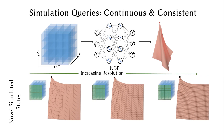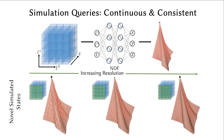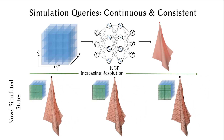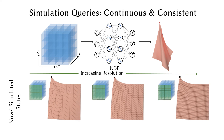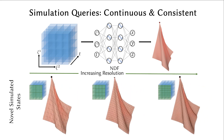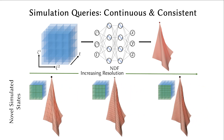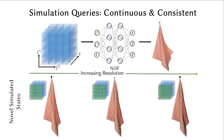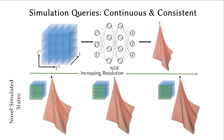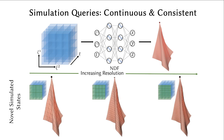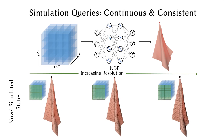Upon convergence, our method encodes the learned quasi-static state of the thin shell that can be queried continuously in space. It allows surface-state sampling at arbitrary spatial resolutions without retraining.